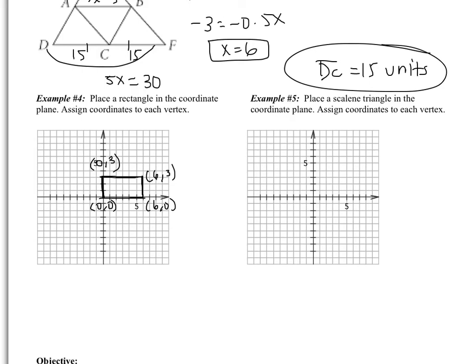Right now, pause the video and put a second rectangle in example 4, and then try example 5. So you have two that you need to do. Put a different rectangle in example 4, and then put a scalene triangle in example 5. Come back when you are finished.